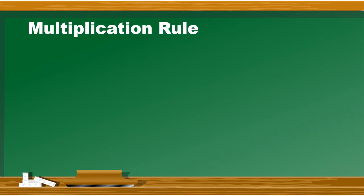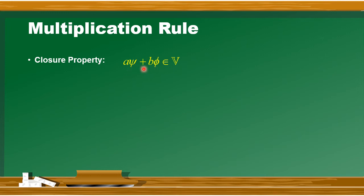तो next हम देखते हैं multiplication rules. Multiplication rules भी almost addition rule की तरह ही हैं. इसमें सबसे पहला rule है closure property. Like आपके पास दो vectors हैं psi and phi - psi को किसी scalar number a से multiply करते हैं, दूसरे vector phi को किसी scalar number b से multiply करते हैं, और उन दोनों vectors को add करते हैं तो जो new vector बनेगा वो भी इसे vector space का ही element होना चाहिए. तो इसको closure property of the multiplication rule का नाम दिया जाता है.